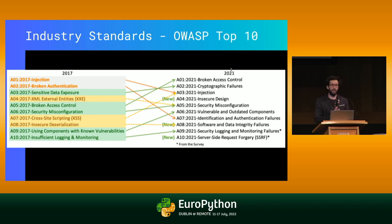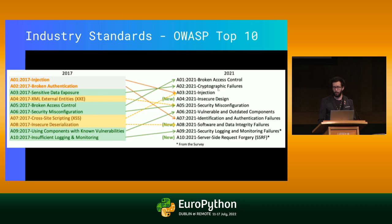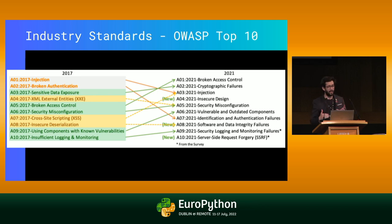One great resource is the OWASP Top 10 — a report that comes out every year highlighting the top 10 highest vulnerabilities in the web space. You can see things like broken access control, cryptographic failures, injection. Remember this list because by the end of this talk, we're going to have a similar list but specific to machine learning.